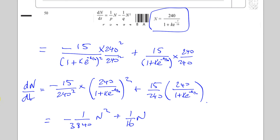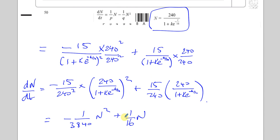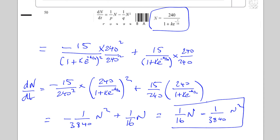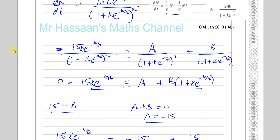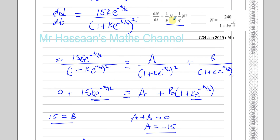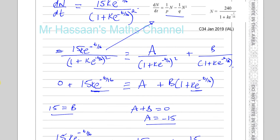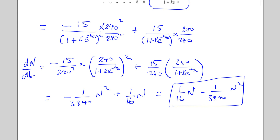So we got it in the required form: dn/dt equals 1 over 16 times n minus 1 over 3840 times n squared. We've actually done what we needed to do, and that was a pretty tough question. The key point was realizing this is one fraction and the target is two fractions — thinking of partial fractions, and then repeated roots: one factor squared, one not squared. Be very careful about silly mistakes, and don't ever give up when you have a question like this.